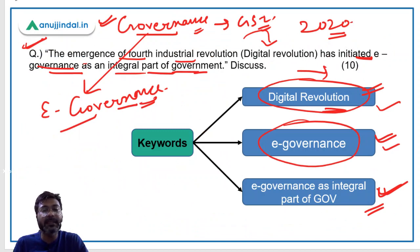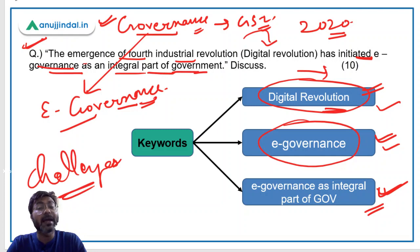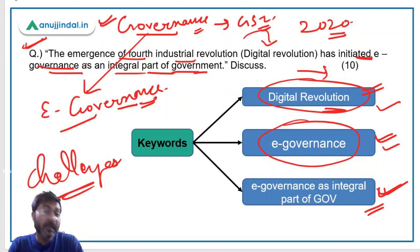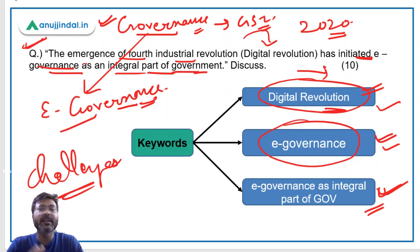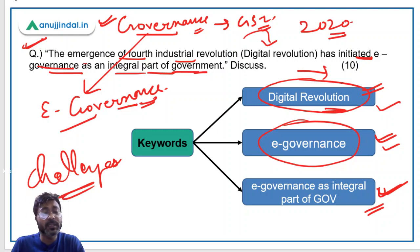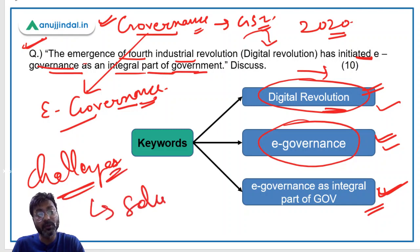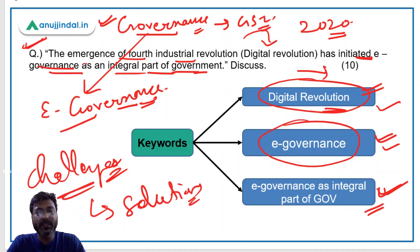One could also discuss challenges in e-governance, but that would make the answer very long and we have to keep the word limit in mind. Challenges are not that important in this particular question because it is only asking how e-governance is now an integral part. And if you do include challenges, you would need to provide solutions in the conclusion too — making it very long. So challenges are not required for this particular question.